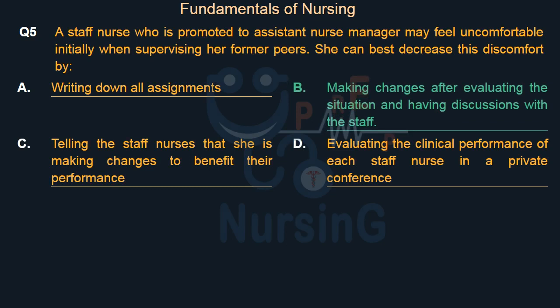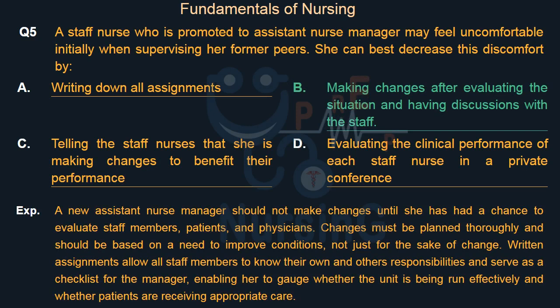A new assistant nurse manager should not make changes until she has had a chance to evaluate staff members, patients, and physicians. Changes must be planned thoroughly and should be based on a need to improve conditions, not just for the sake of change. Written assignments allow all staff members to know their own and others' responsibilities and serve as a checklist for the manager, enabling her to gauge whether the unit is being run effectively and whether patients are receiving appropriate care.